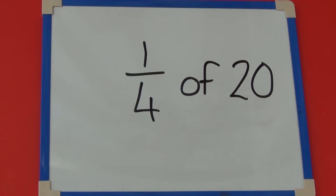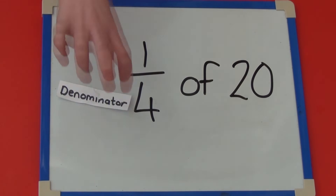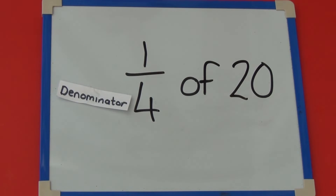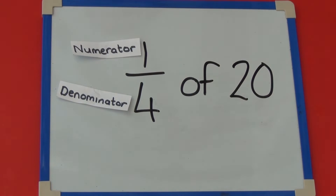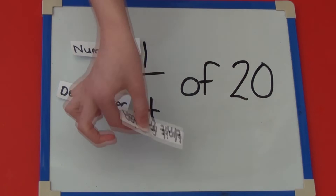First we're going to look at how to find one quarter of twenty. The denominator is four. That tells us we need to divide the twenty by four. So I'll share the twenty sweets between my four teddies. The numerator is one, so that tells us we need to count how many sweets one teddy gets. As the numerator is one, this tells us this is a unit fraction.